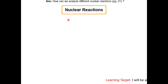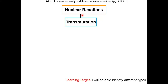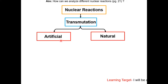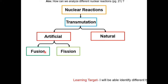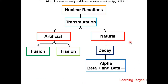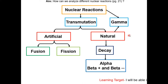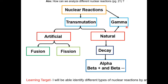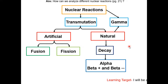Here is a concept map that summarizes what we talked about. An example of a nuclear reaction is transmutation, which can be divided into two categories: artificial and natural. Artificial transmutation is further divided into fusion and fission. Natural transmutation is considered decay — alpha, beta plus, and beta minus decay. Gamma is considered a nuclear reaction and is natural, but is not considered transmutation; during gamma decay, the element stays the same and excess energy is just released. This concludes the video lesson.